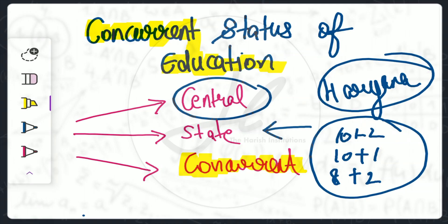Under concurrent status, both the central government and the states work together in education. The central government can implement its decisions and policies in each state.